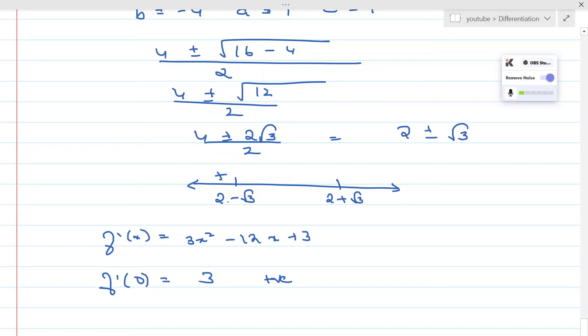Now let's pick a value between these two values, 2 - √3 and 2 + √3. I think we can take the value as 2. f'(2) is 3×4 - 12×2 + 3, so 12 - 24 + 3, which is -9. We're getting a negative value.